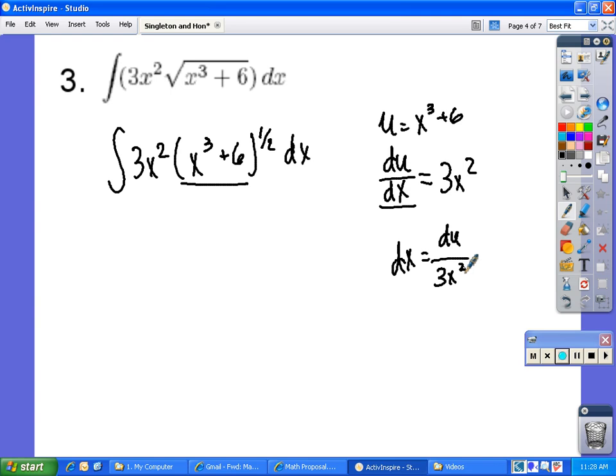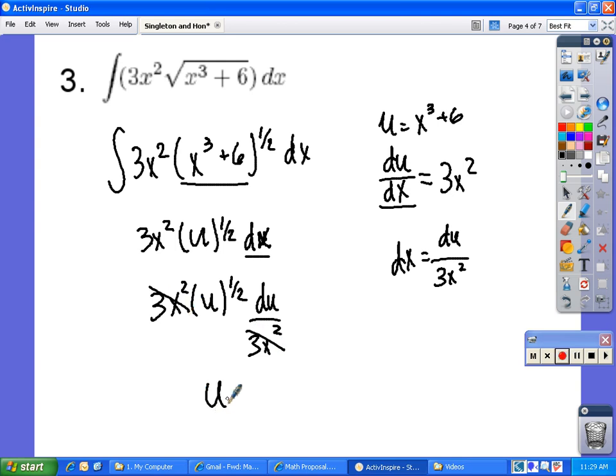After performing substitution we end up with 3x squared u to the 1 half dx. We then plug in for the dx value. So we have 3x squared the value of u to the 1 half times du over 3x squared. These two values cancel out and we are left with u to the 1 half du.